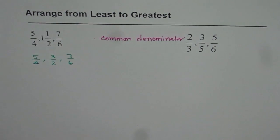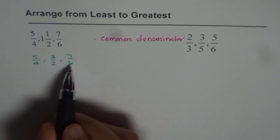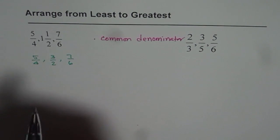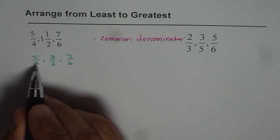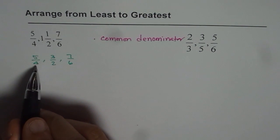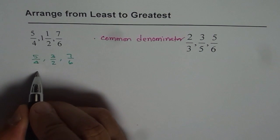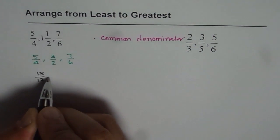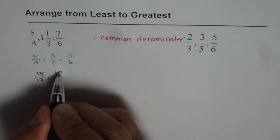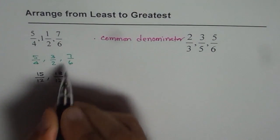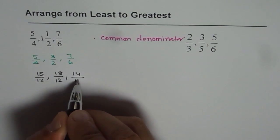Now what is the common denominator here? The common denominator should be 12. So let's make them all 12. So if I make them 12, I have to multiply the first one by 3. So I got 15 over 12 and this one by 6, 18 over 12 and by 2, 14 over 12.